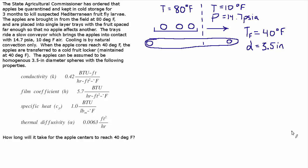The State Agricultural Commissioner has ordered that apples be quarantined and kept in cold storage for three months to kill suspected Mediterranean fruit fly larvae. The apples are brought in from the field at 80 degrees Fahrenheit and are placed into single-layer trays with the fruit spaced out far enough that no apple affects another.